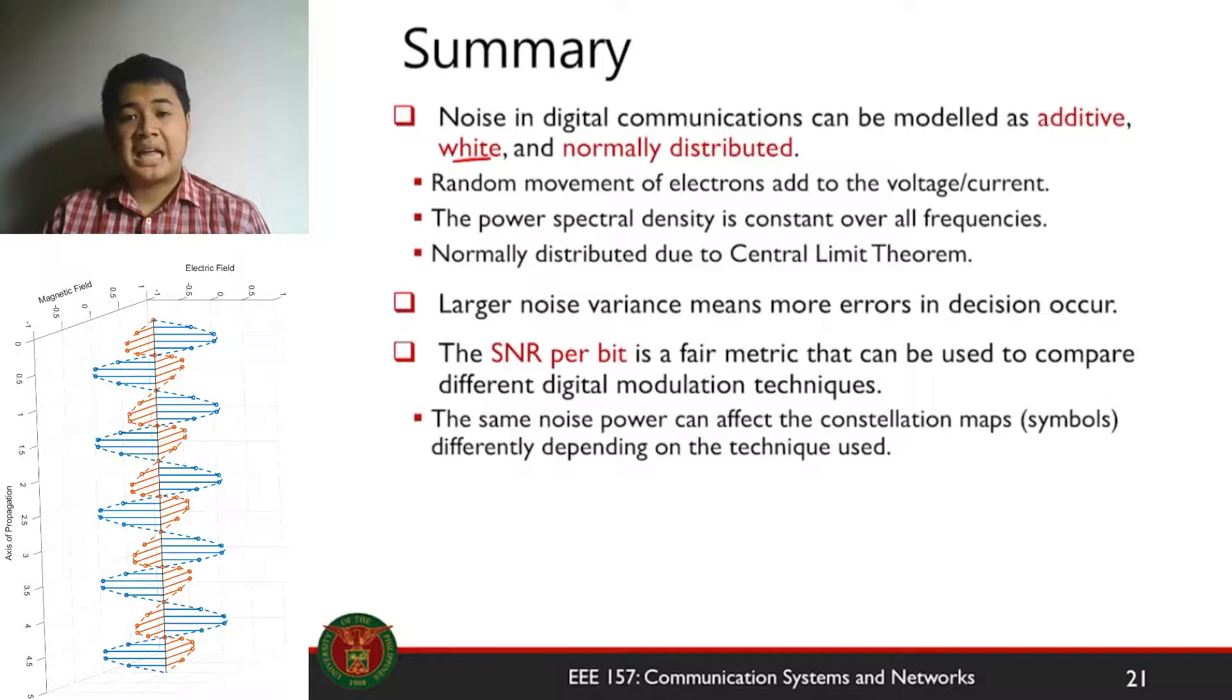We also saw that larger noise variance means more errors in decisions because a larger noise variance means larger noise power. The SNR per bit is used as a fair metric to compare different digital modulation schemes. So the same noise power can affect your constellation maps differently depending on the technique used. So we will be going down to the bit level to see how a digital communication technique fares when subjected to noise.